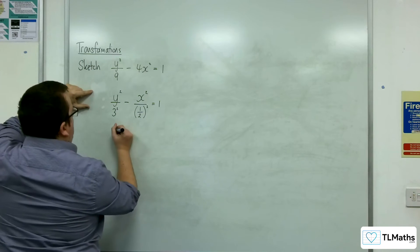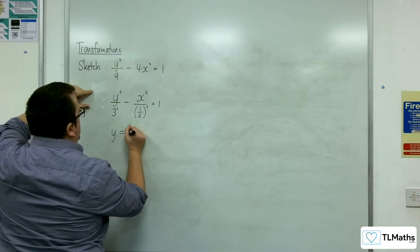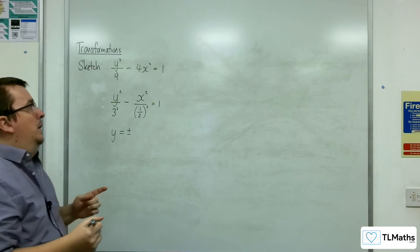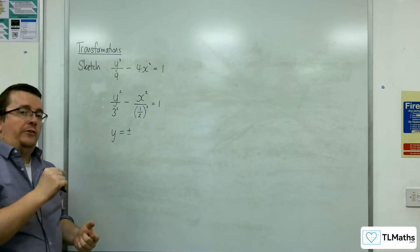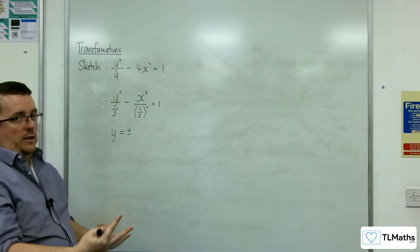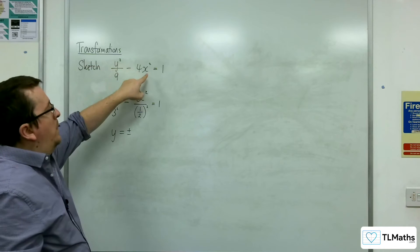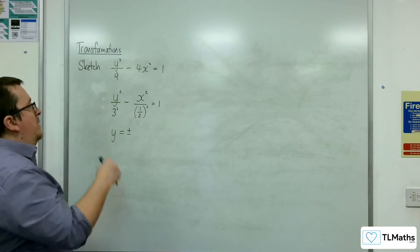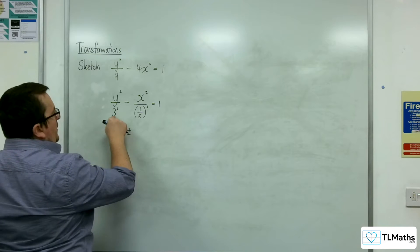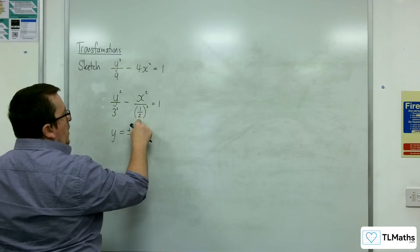So from that I can write down the equations of my asymptotes. This is y equals plus or minus a over b times x because it's not of the form of x squared take away y squared, it's y squared take away x squared. So we're looking at a over b this time, so that's 3 over 1 half.